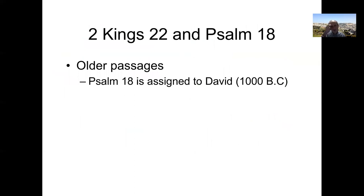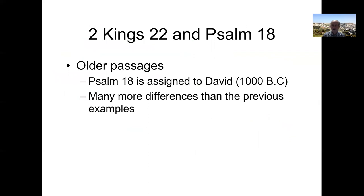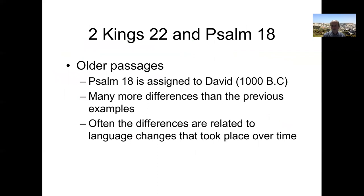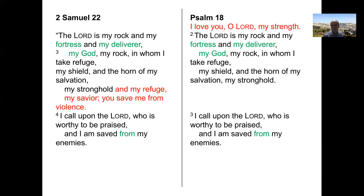This is an older passage — a Psalm of David goes back to around 1000 BC, so this is the oldest comparison we've looked at yet. There are many more differences than the previous examples. Interestingly, sometimes the differences are related to language changes that took place over time. Languages don't stay the same — meanings of words change, grammar changes. For example, Psalm 18's very first clause says 'I love you, O Lord, my strength,' but that isn't in 2 Samuel 22. The word for love in Psalm 18 is not the normal Hebrew word for love — it's a word that usually has the connotation of showing compassion, like a mother having compassionate love for her infant child. Maybe that's why 2 Samuel 22 left it out.